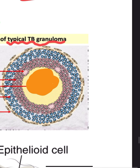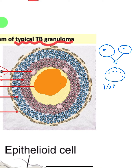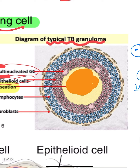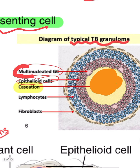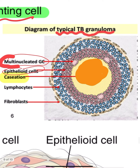These activated macrophages fuse together to form Langhans giant cells, with nuclei lining the periphery of the cell. This is how the Langhans giant cell is formed. Next, epithelial cells cover the area adjacent to the granuloma, and the outermost covering of the TB granuloma consists of lymphocytes and fibroblasts.